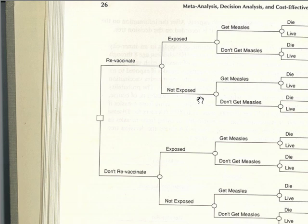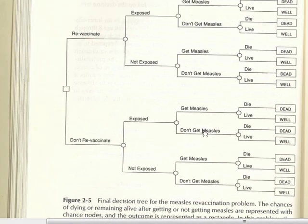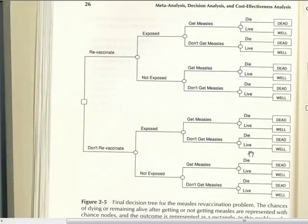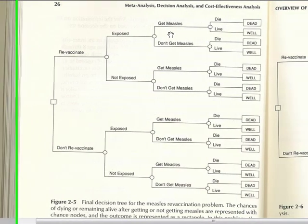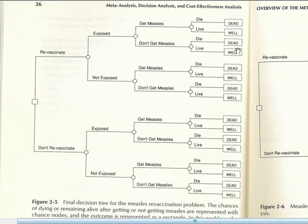Even when they do not get exposed, there are chances they either get measles or don't. Similarly for the other option. Once they get measles, they may either die or live well — so this is our outcome. These outcomes can occur at several events and options followed.